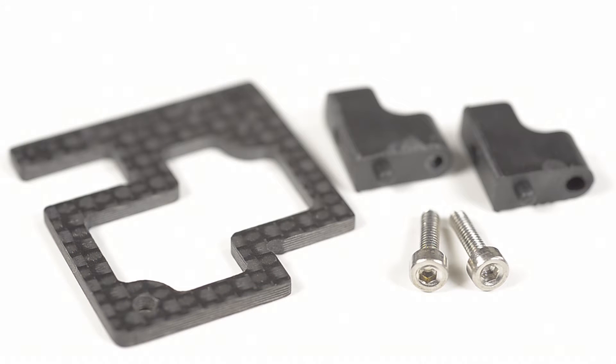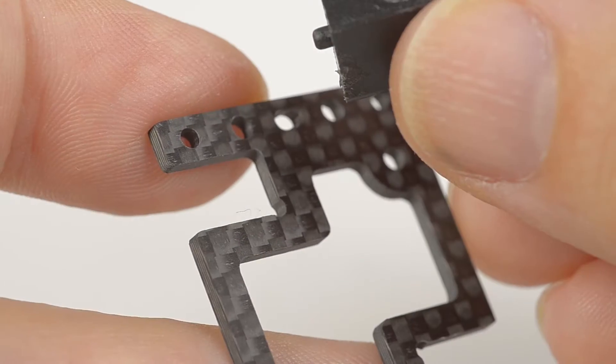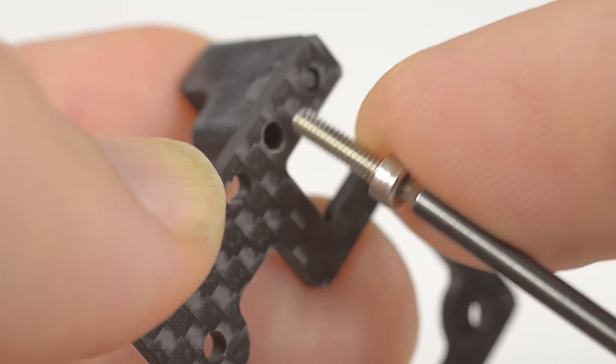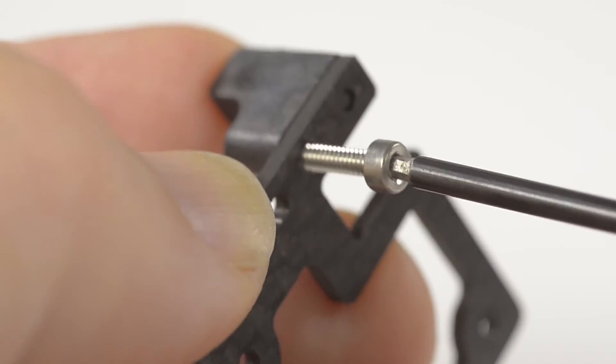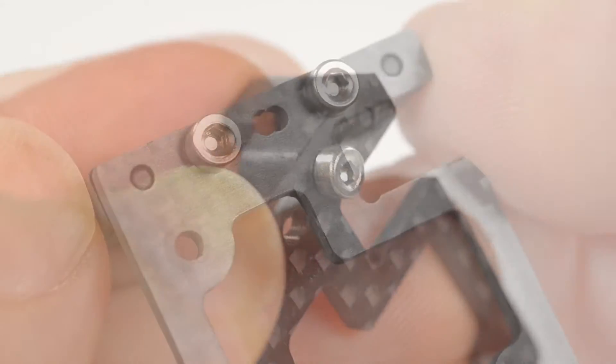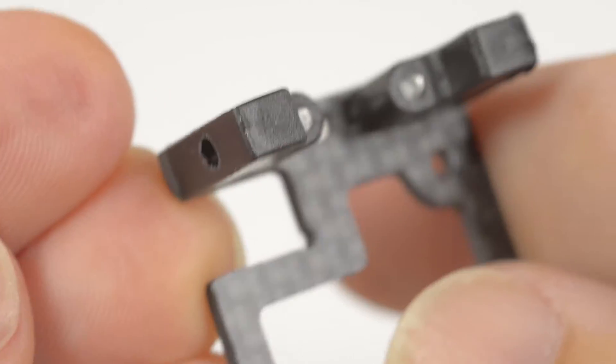Take the camera plate, two right-angle pieces and two M2 by 8 screws. Mount the right-angle piece on the back of the plate and insert the M2 by 8 screw from the other side. Tighten firm without stripping the threads. Repeat for the other side.